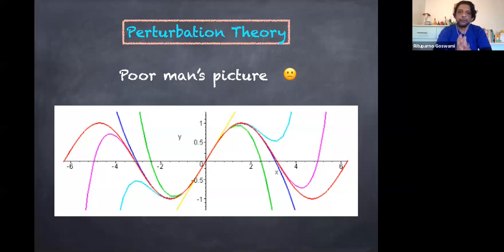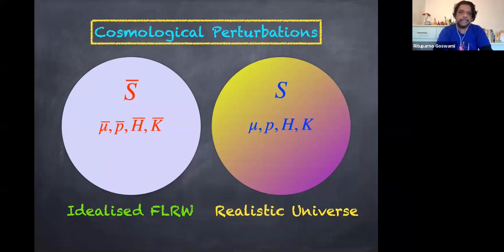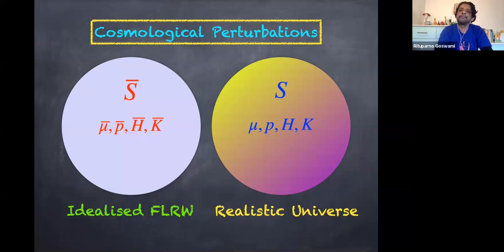The same should be true for cosmological perturbation theory. What we do generally is think of an absolutely idealized Friedmann–Lemaître–Robertson–Walker universe. Everything — the energy density, pressure, the Hubble parameter, the curvature — is denoted with an overbar. On the right side is the real universe, which is definitely not homogeneous and isotropic. It's a lumpy real universe, and all quantities are represented without any overbar.